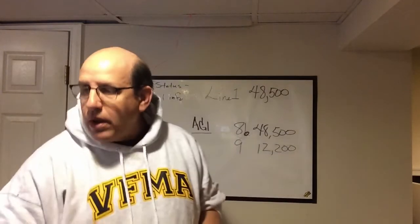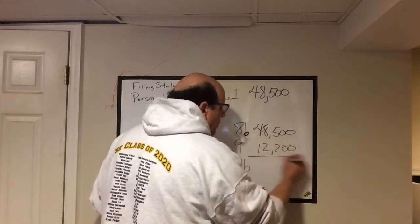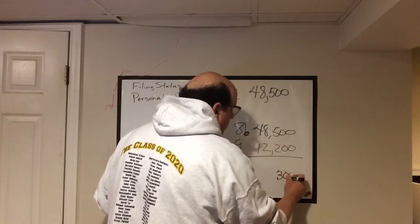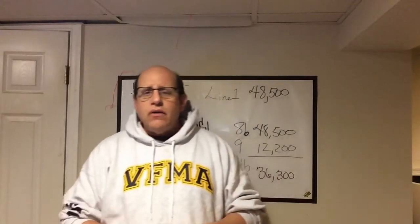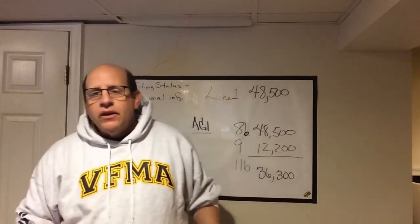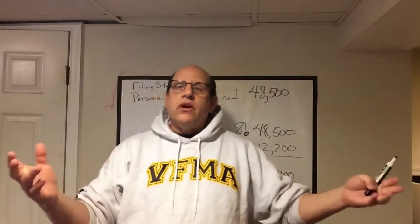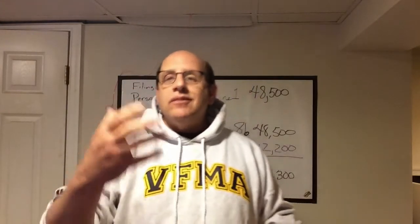After taking off the standard deduction, line 11b is your taxable income. So we subtract $12,200 from $48,500 and you're being taxed on $36,300. That's pretty good — you started at $48,000 and you're down to $36,000. You've basically cut your income by a quarter, so you're only paying taxes on 75% of the money you made.